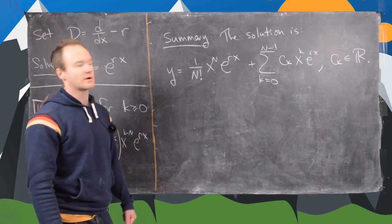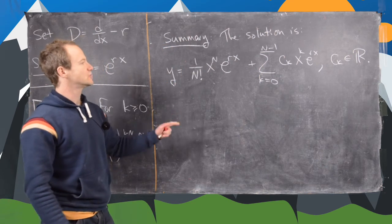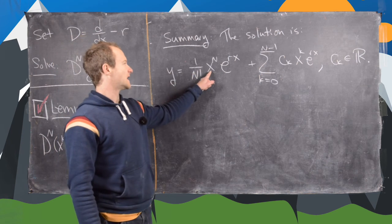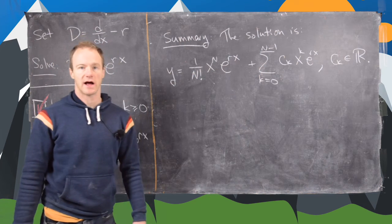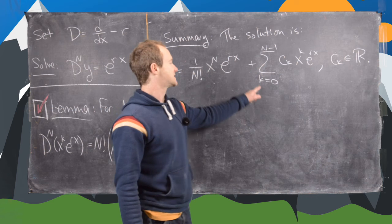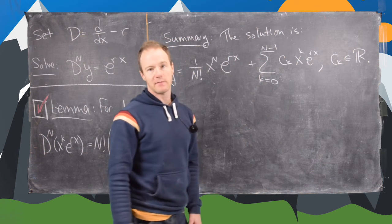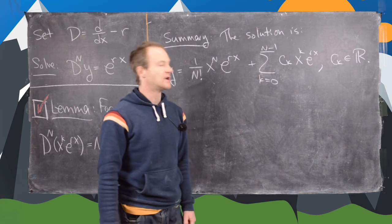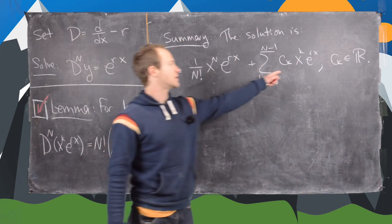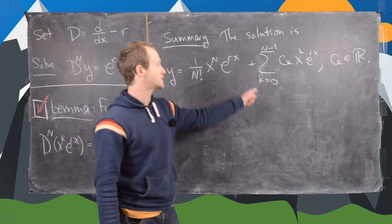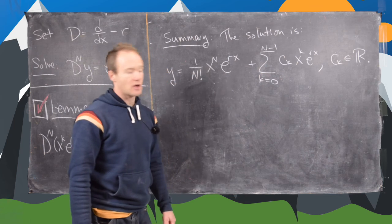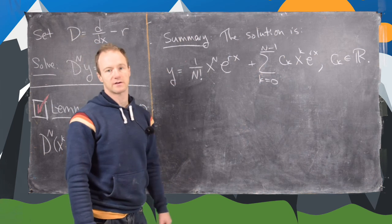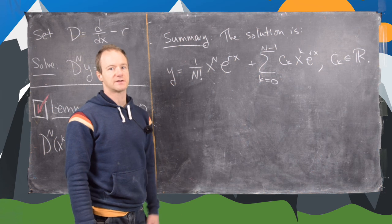Our solution is of the following form: 1 over n factorial times x^n e^(rx), plus the sum from k=0 to n-1 of c_k x^k e^(rx), where the c_k's are real numbers — these are the free variables. We have an n-dimensional homogeneous solution plus the particular solution term. That's the end of the video.